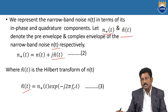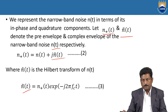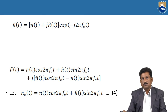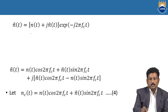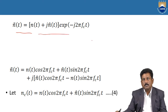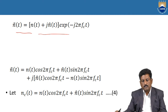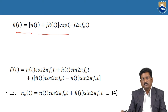So n₊(t) and n̂(t) are the pre-envelope and the complex envelope of the Narrowband Noise n(t). Therefore, n̄(t) = [n(t) + j·n̂(t)]·e^(−j2πfc·t). Expanding, since e^(−j2πfc·t) = cos(2πfc·t) − j·sin(2πfc·t), we get: n̄(t) = [n(t)·cos(2πfc·t) + n̂(t)·sin(2πfc·t)] + j[n̂(t)·cos(2πfc·t) − n(t)·sin(2πfc·t)].